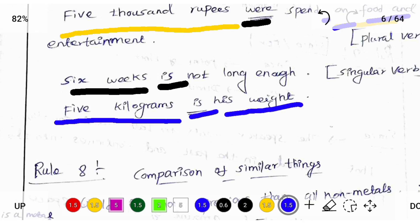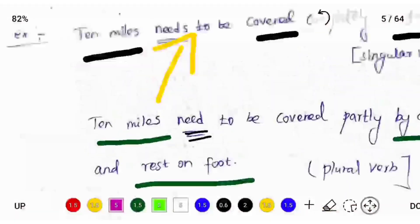Students to understand, when we covered some measurements in two ways or more than two ways, we should use plural verb. Otherwise, use singular verb. Don't confuse it. I just recap this rule.